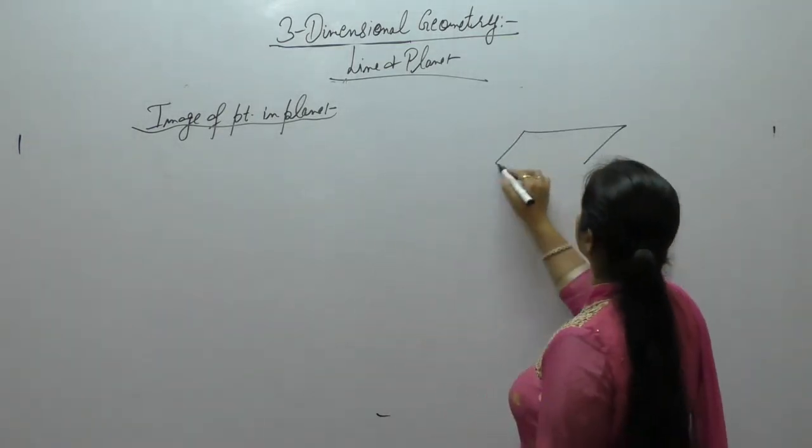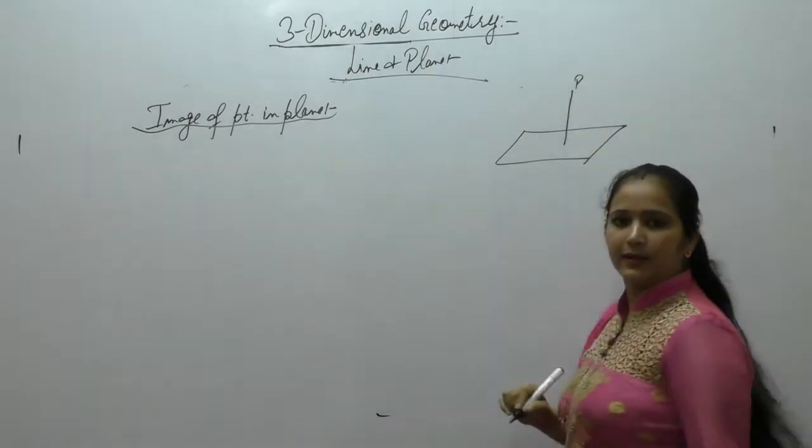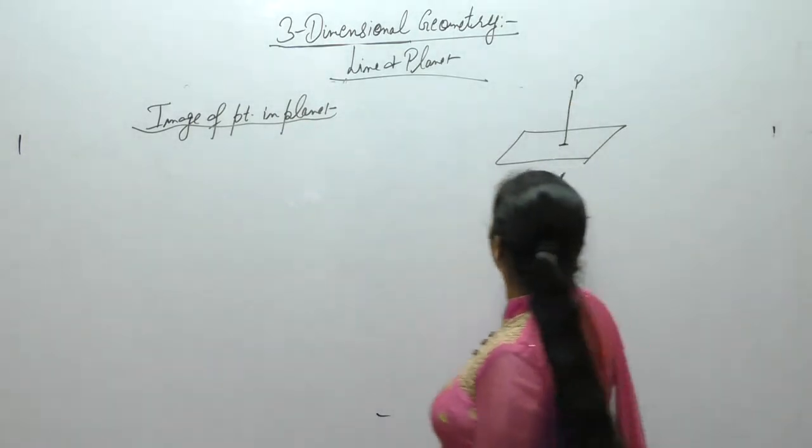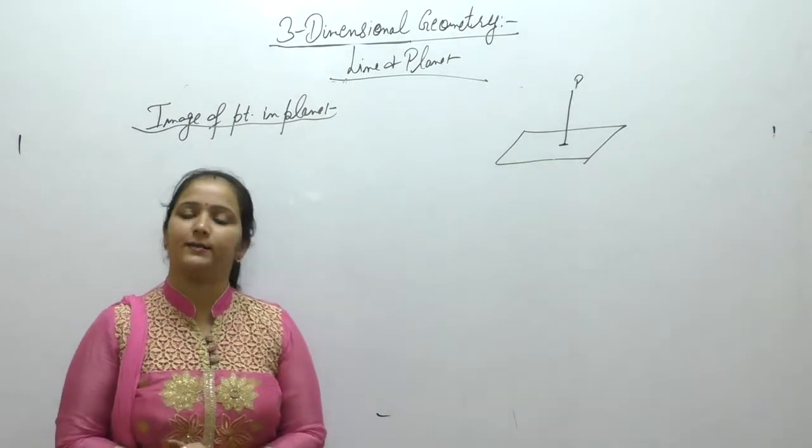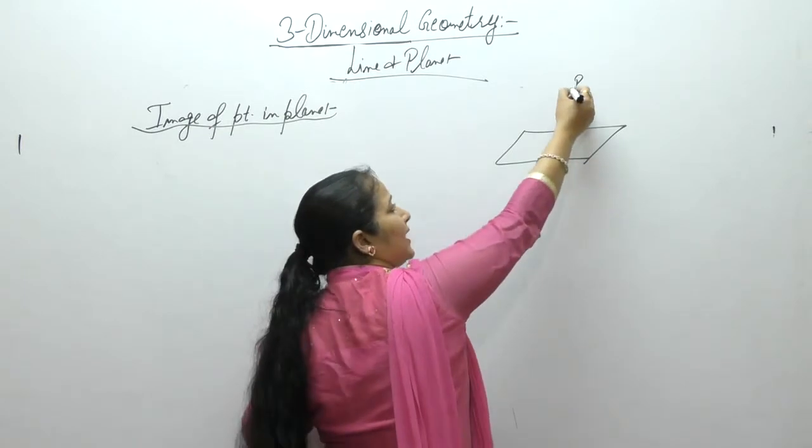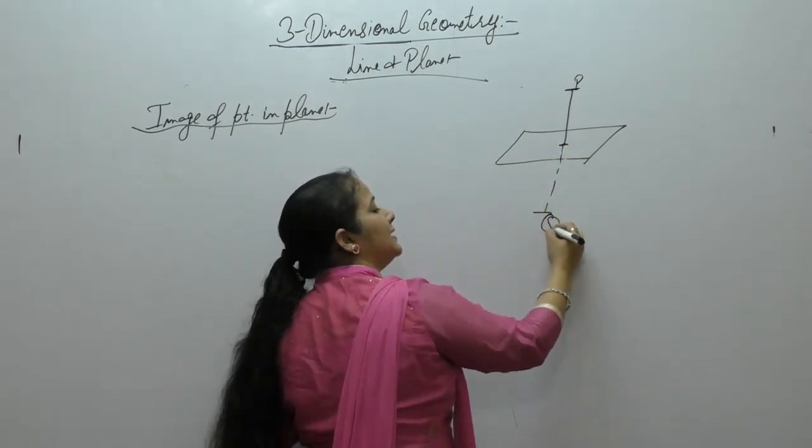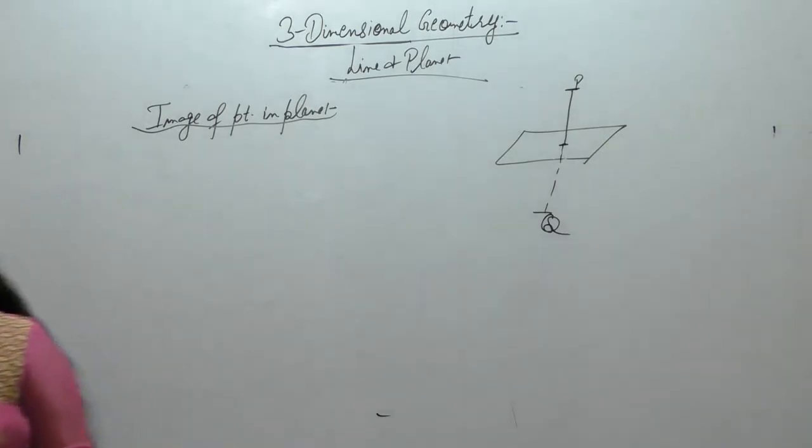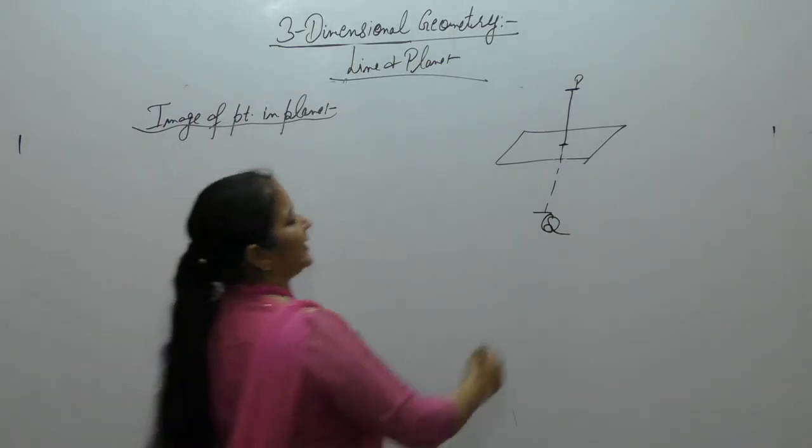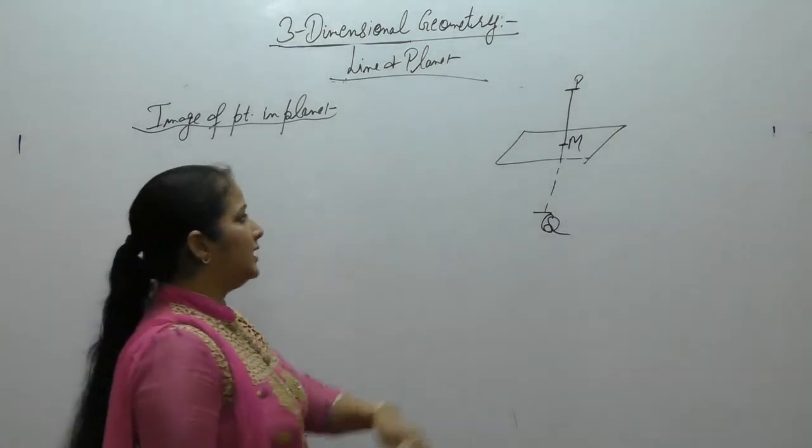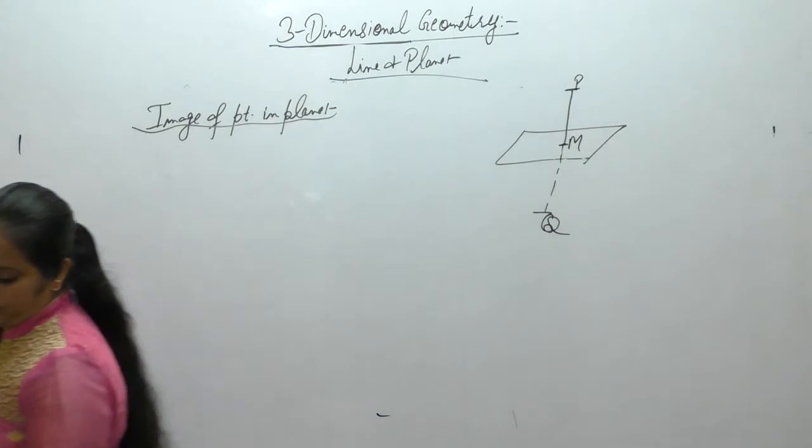Image of point in plane. Like this is the plane. This is point P. It passes through P. Point P, this point we say line, which is perpendicular to the plane. Now, we want to find the image of that point P. Let Q is the image of this point P. Now, let this line as M. So, the first thing we do in this case: Write equation of line passing through P and normal to given plane.